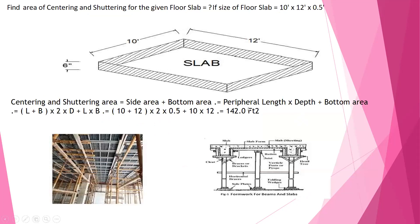Slab area — how to calculate it. The slab size is 10 feet by 12 feet and 6 inches height. Shuttering area equals side area plus bottom area, which is peripheral length into depth plus bottom area. That means length 12 feet plus depth 10 feet, multiplied by 2, into depth 0.5 feet (6 inches), plus length into breadth 10 feet by 12 feet. This gives 142 square feet. The sides, bottom, and top slab shuttering area are shown in the image.